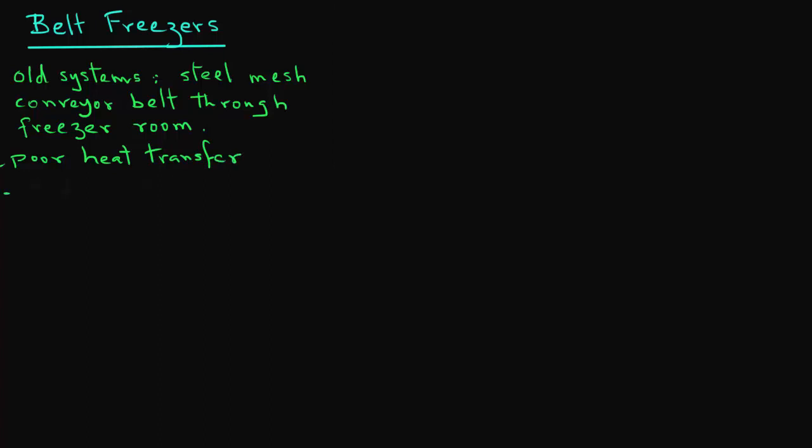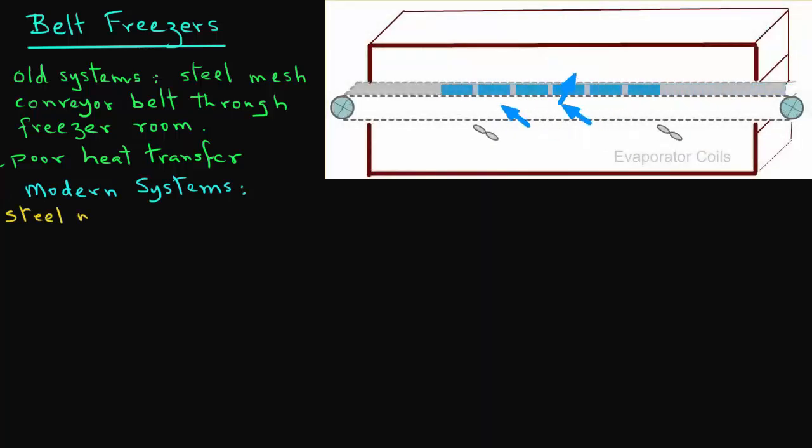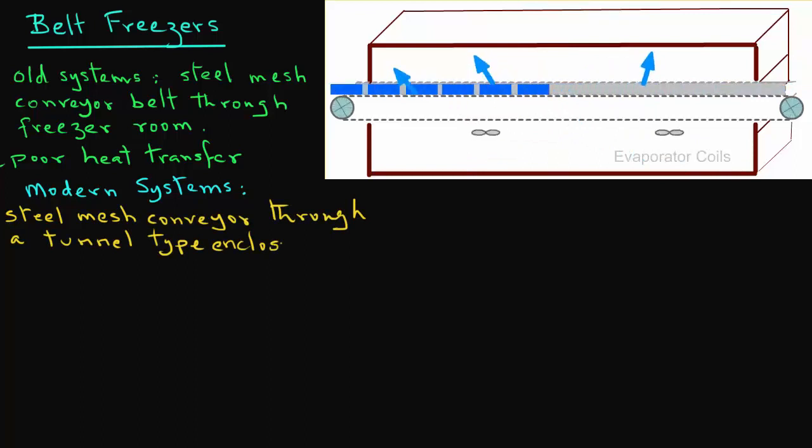In the modern systems, again a steel mesh conveyor is used, except it is run through an insulated tunnel type enclosure. In tunnel type belt freezers, air moves up through the product and there is good contact between air and the product.